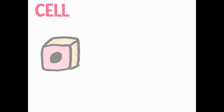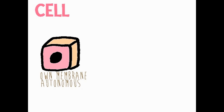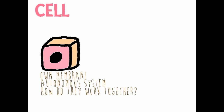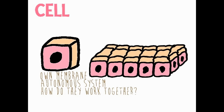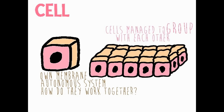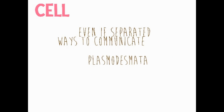Cells — separated individuals. Each have their own membrane and their own autonomous system. Yet, how do they work together? Tissues, for example, can only exist because cells manage to group with each other. In fact, though they are separated, cells have developed multiple ways of communicating with each other.